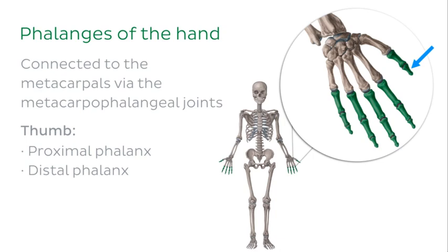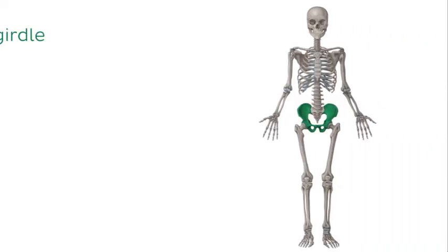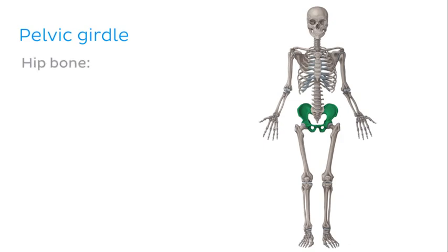So far we've looked at the bones of the skull, trunk, shoulder girdle and upper limb. Now let's move further down the body to explore the pelvic girdle. The pelvic girdle is formed by the pelvic bones, also known as your hip bones. Three fused bones make up each hip bone: the ilium, the ischium and the pubis.